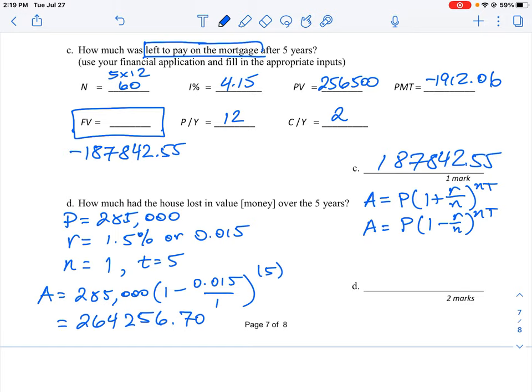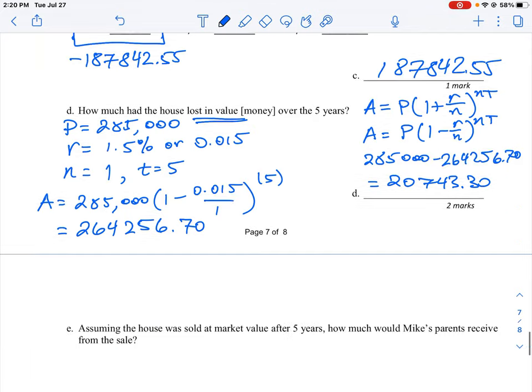But the question is actually just how much did it lose in value? So you actually to do this question properly, you have to take the initial amount, which is $285,000, and you have to subtract the $264,256.70 from that. So the loss on this house turns out to be $20,743.30. That's how much it lost at the end of five years. It wasn't worth more than what they started with.